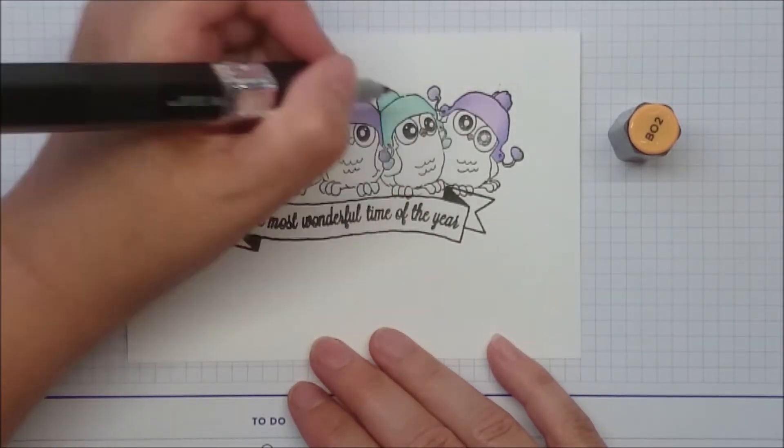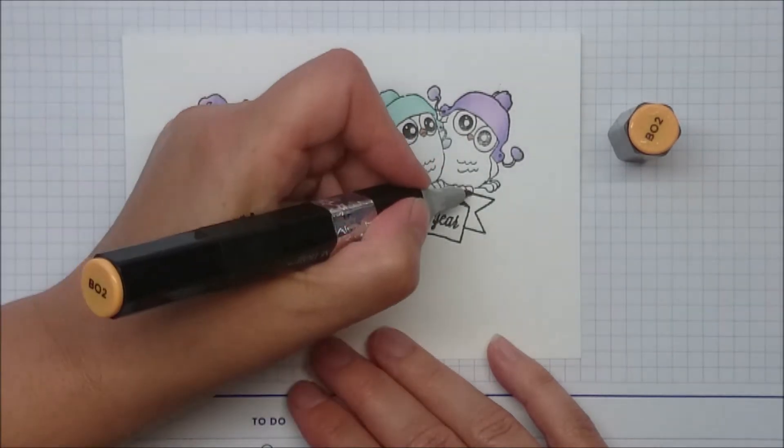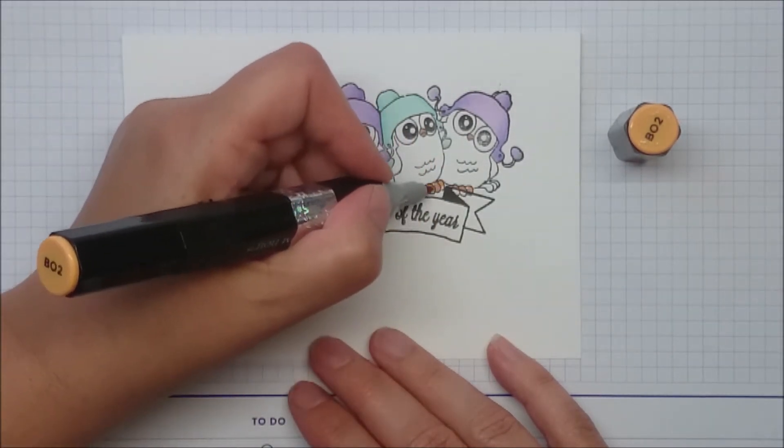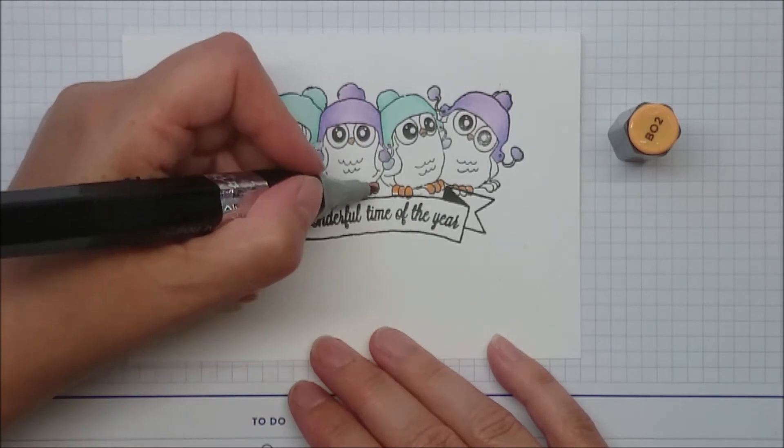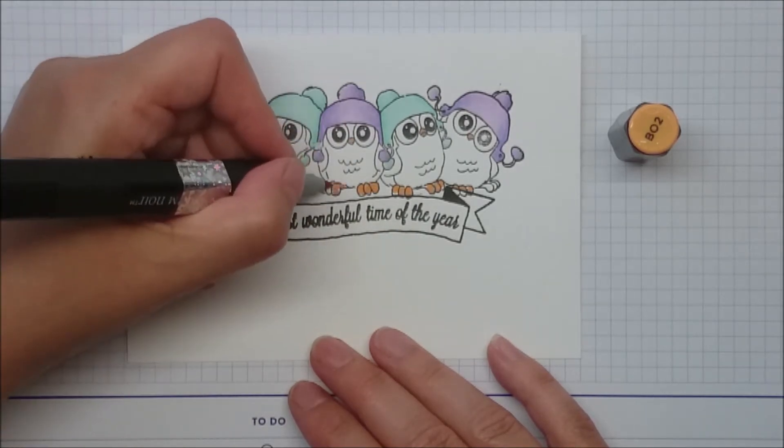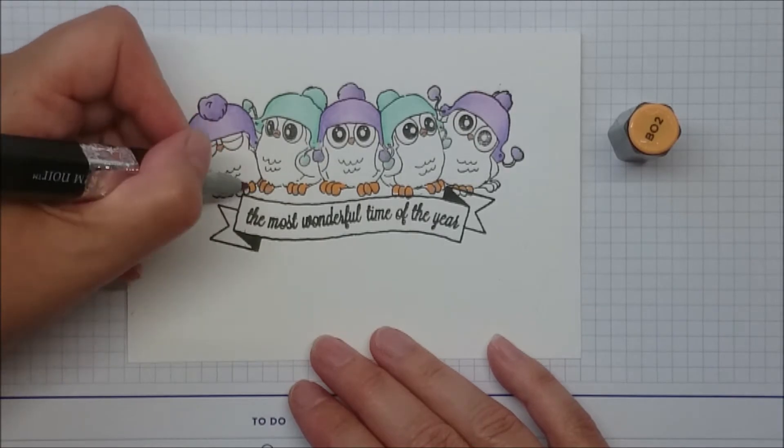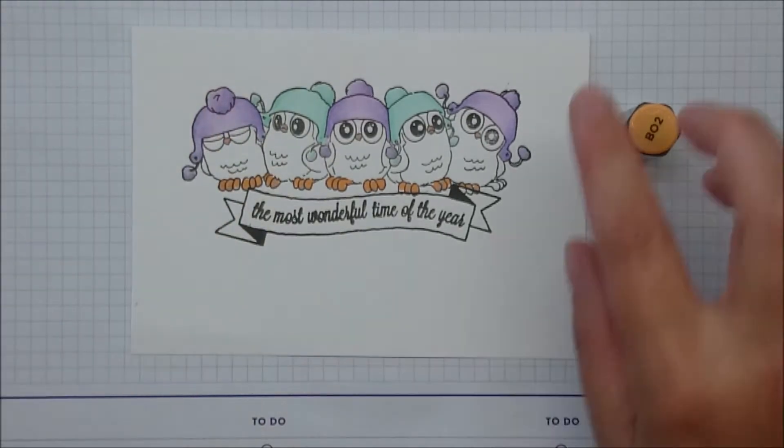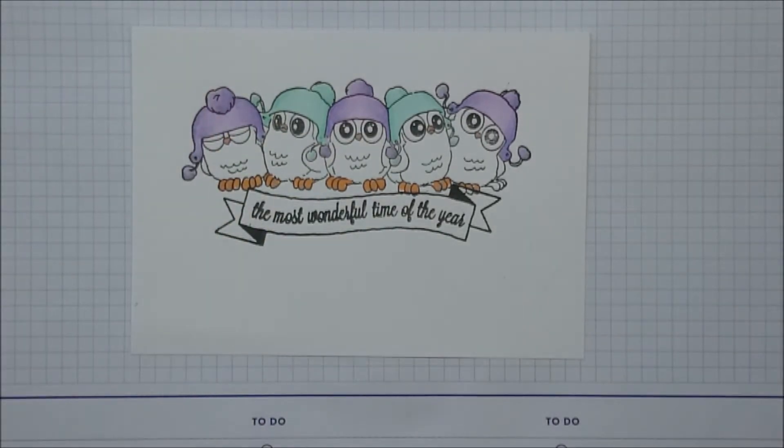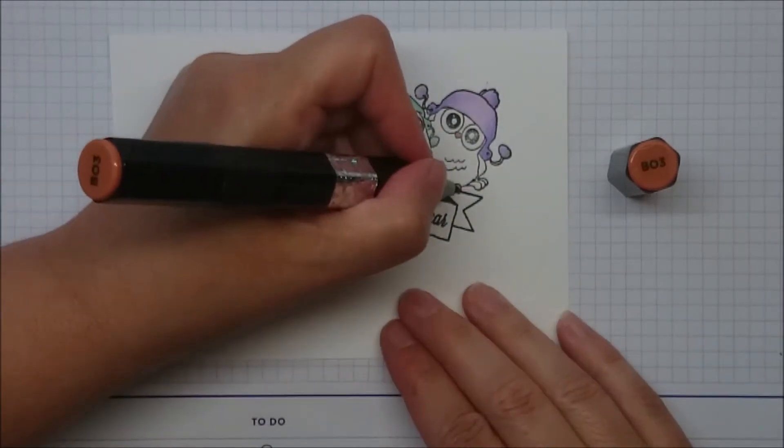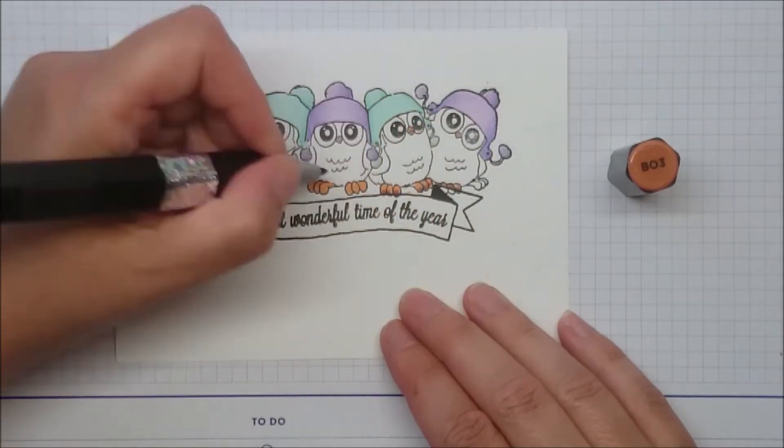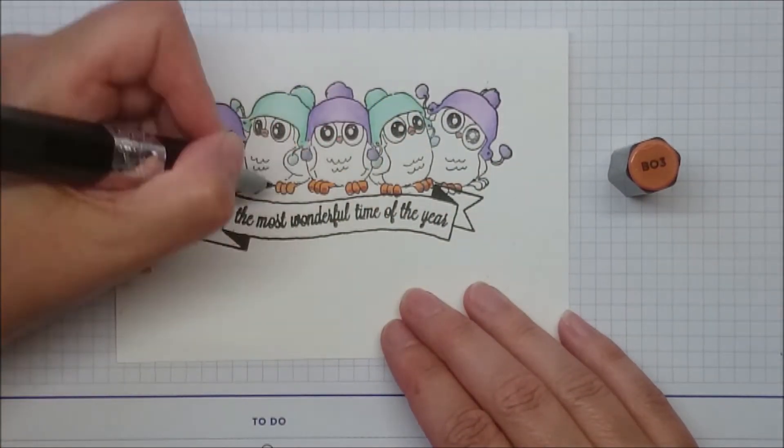So for the beaks, I went for BO. I think that's a brown orange. It's in one of those new colors. I don't know, I should look it up. I keep saying that as well. I did look it up, I just don't remember.